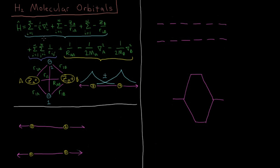The Hamiltonian written up top here is a general Hamiltonian for any diatomic molecule. You've got a nucleus A with ZA number of protons — an integer number of protons in atomic units for the charge — and ZB for the number of protons in nucleus B, a diatomic having two nuclei of course. Then there are two electrons, let's call them electrons 1 and 2. This works in general for up to N electrons labeled with numeric indices, and in general in quantum chemistry, nuclei are labeled with alphabetic indices.